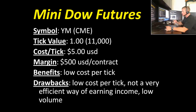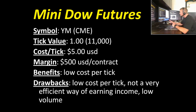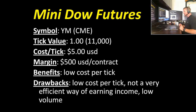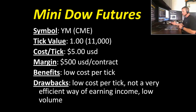The margins are nice and low — only about five hundred dollars per contract — so to trade four lots you'd only need about two thousand dollars. The benefit of trading the mini Dow is that low cost per tick, but that's where the benefits end. That's actually the same as the drawback. The low cost per tick means this is not going to be considered a very efficient way of earning income.